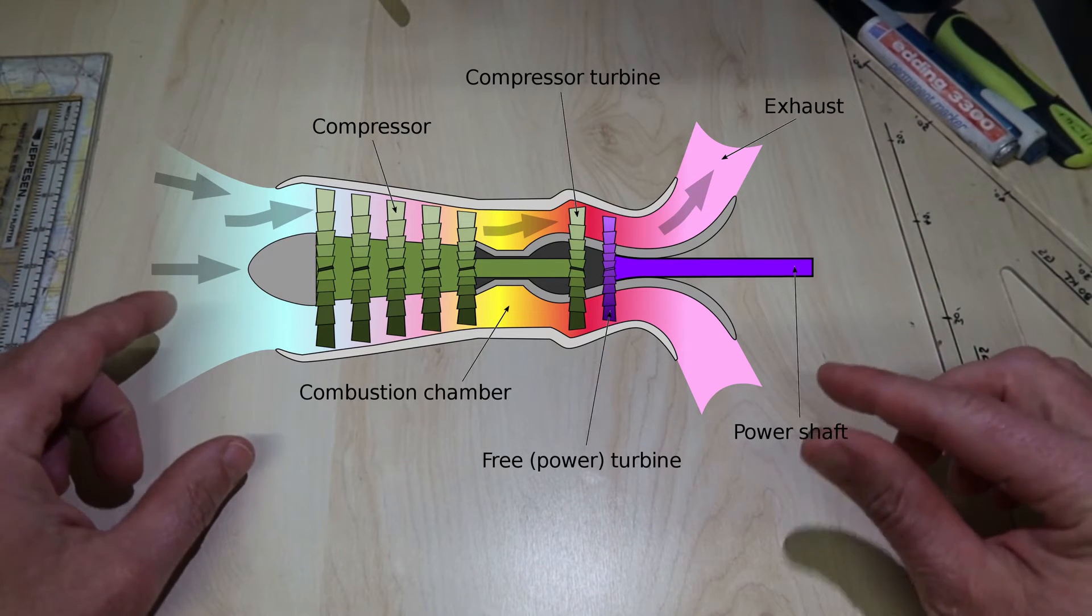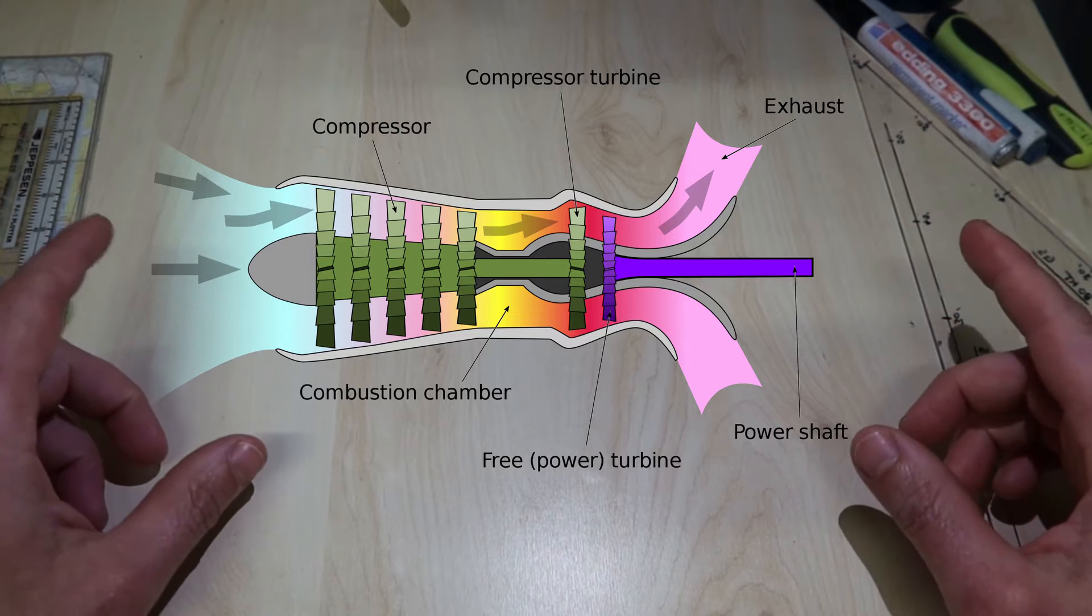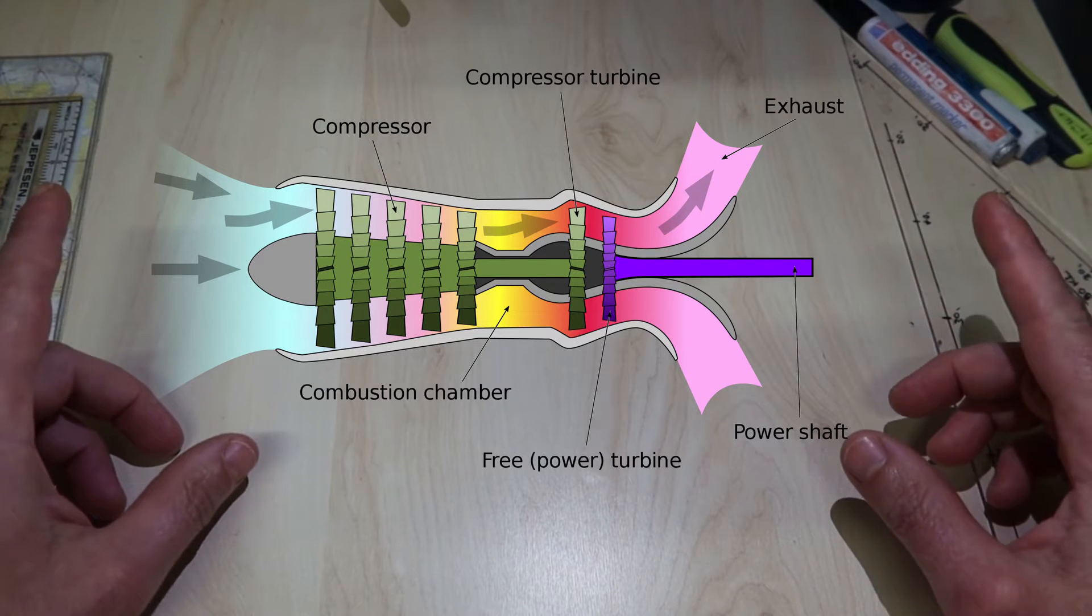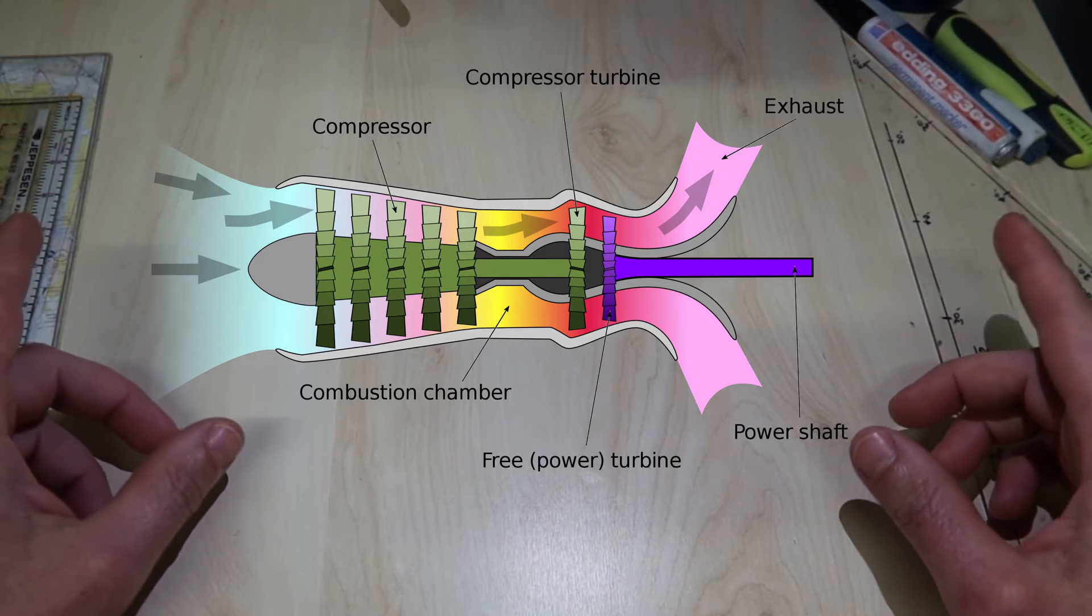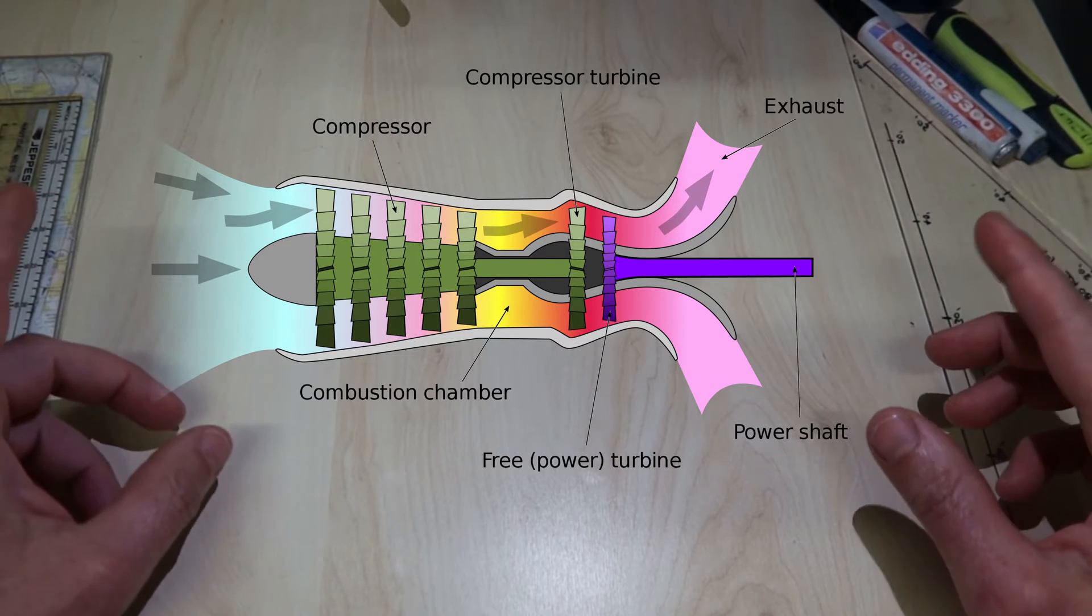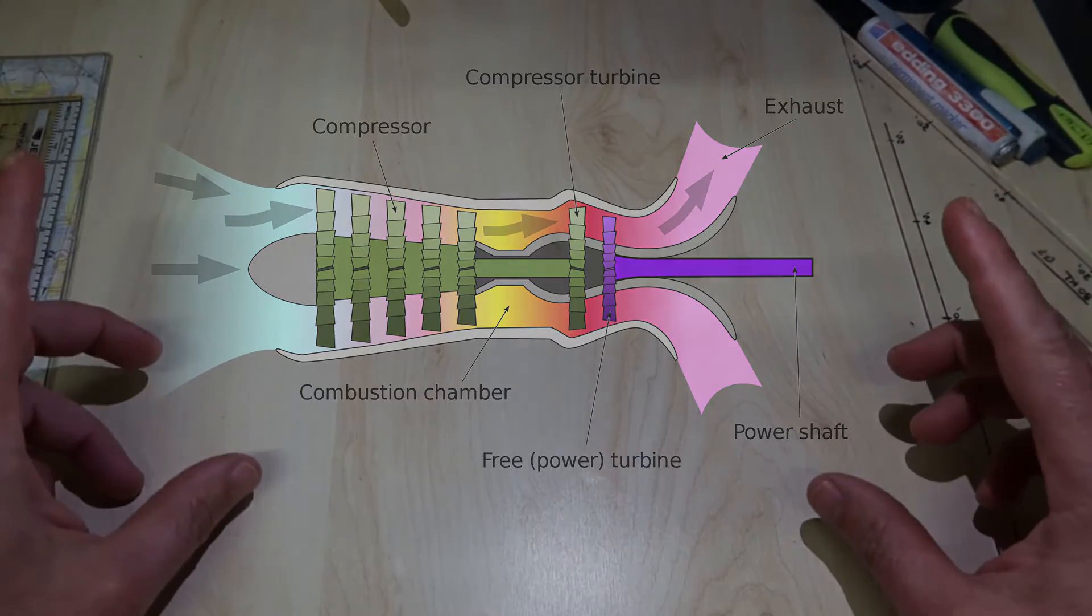The engine can be limited by either the gas generator RPM reaching a limit, the turbine temperature TGT hitting a limit, or the output torque hitting a limit.